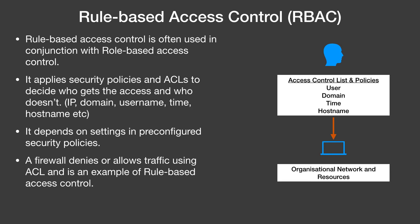Rule-Based Access Control — another type of RBAC. Rule-based access control is often used in conjunction with role-based access control. It applies security policies and ACLs to decide who gets access and who doesn't. The ACLs could be based on IP address, domains, usernames, timing, hostname, and so on. It depends on settings and pre-configured security policies. A firewall that denies or allows traffic using ACLs is an example of rule-based access control.